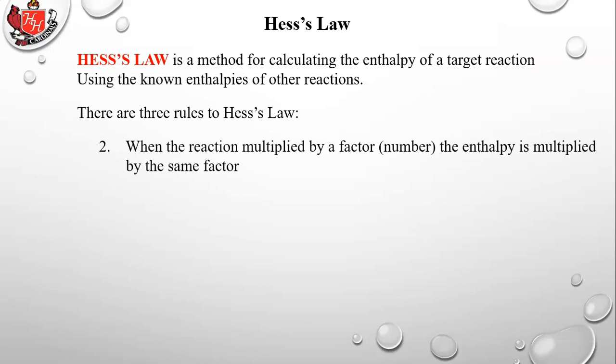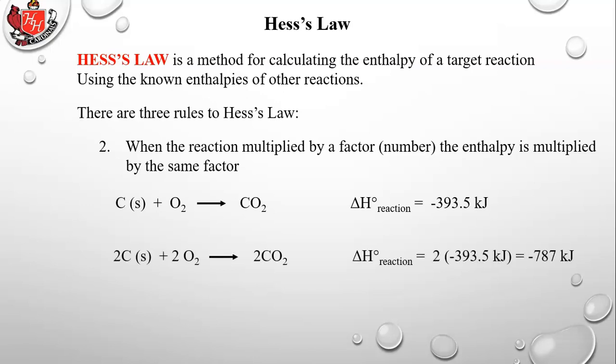Rule two: when the reaction is multiplied by a factor, the enthalpy is multiplied by that same factor. If we multiply everything in our original reaction by two, then the enthalpy is also multiplied by two, going from negative 393.5 kilojoules to negative 787 kilojoules.